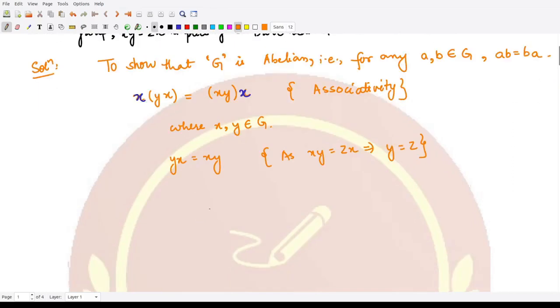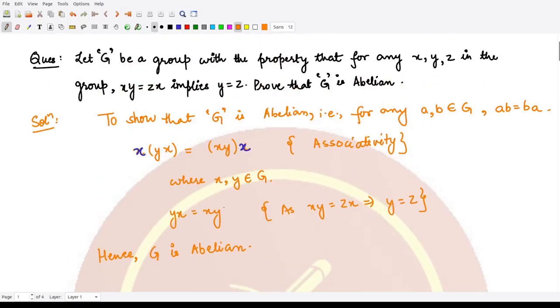And this is what we wanted to prove. This thing is true for all elements. Hence we have proved that the given group G is Abelian. I hope you understood this question well. That is it for this video, thank you for watching.